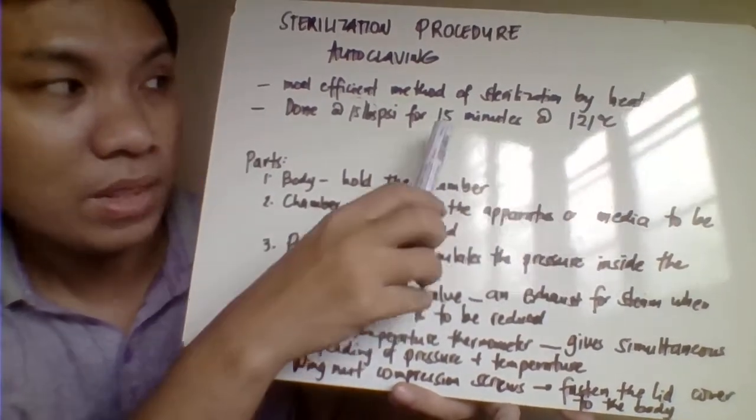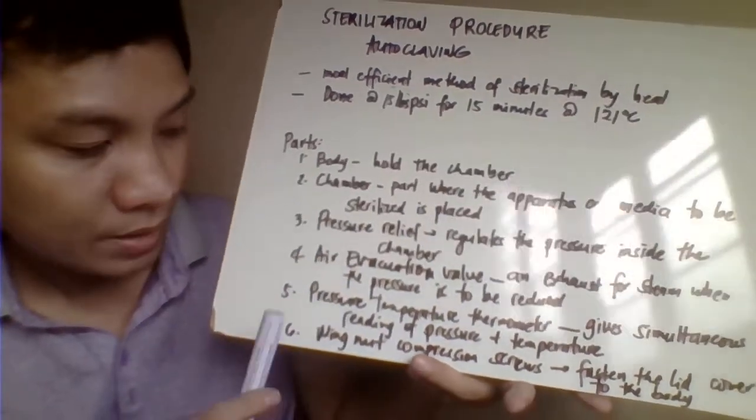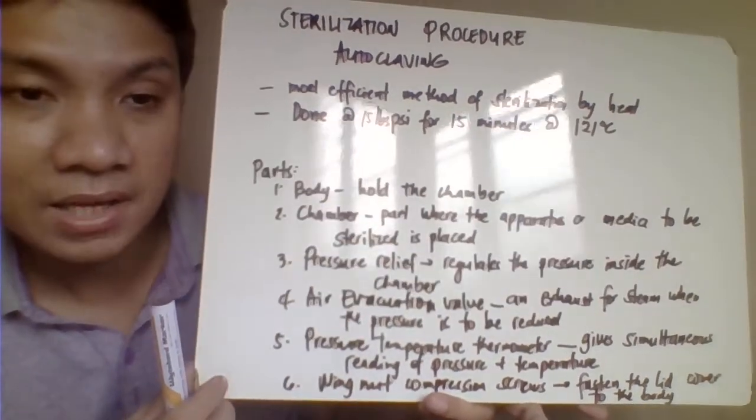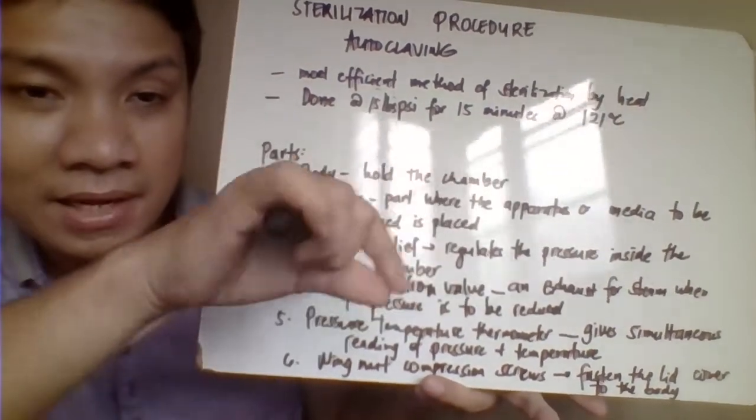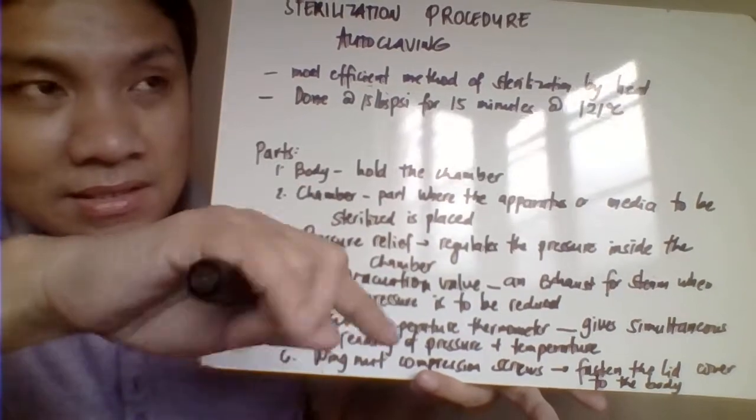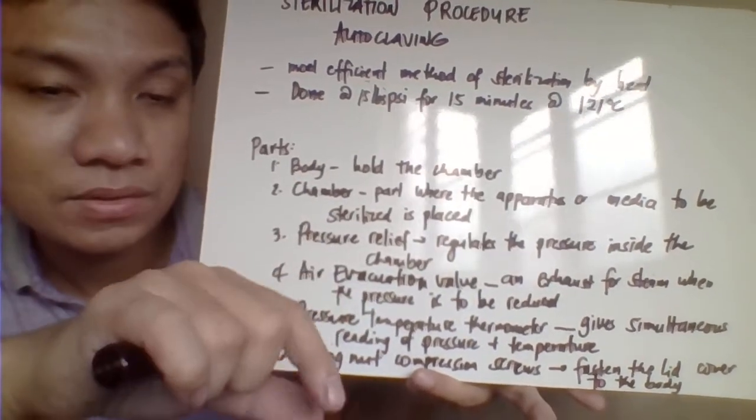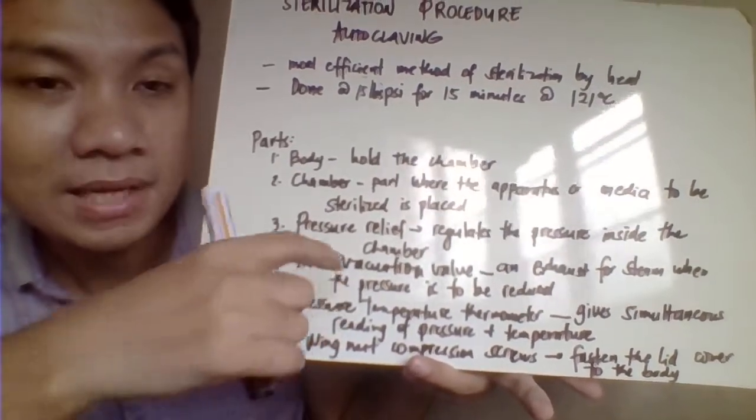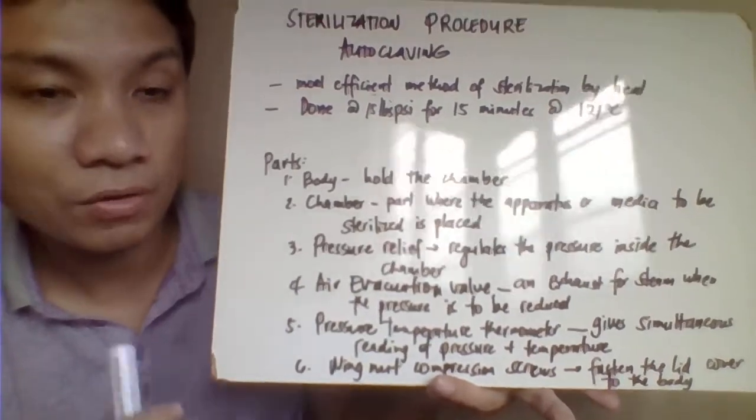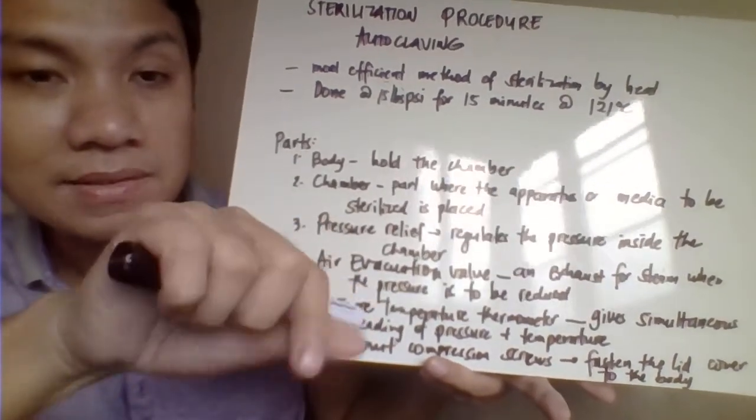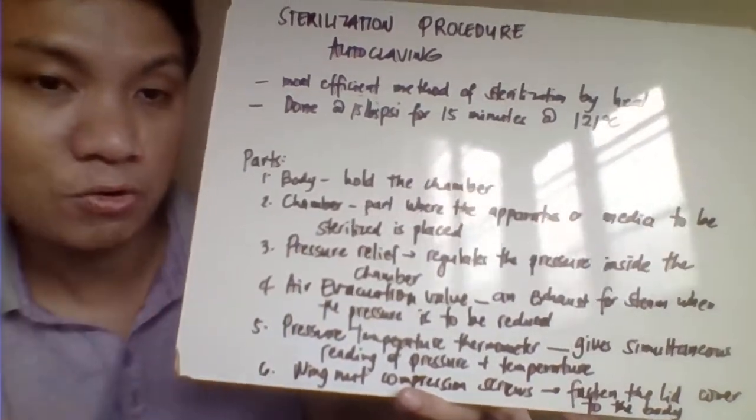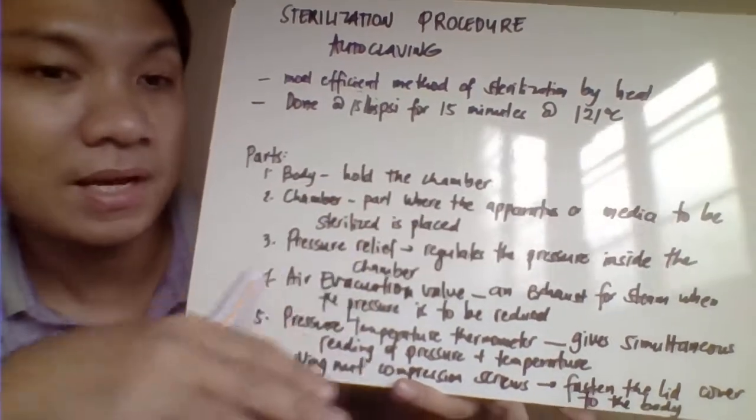The air evacuation valve is the valve that we open and close. We close this when we are about to autoclave, and then we open it to release the pressure after the time is done, after the entire sterilization procedure.